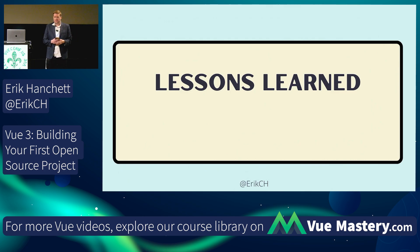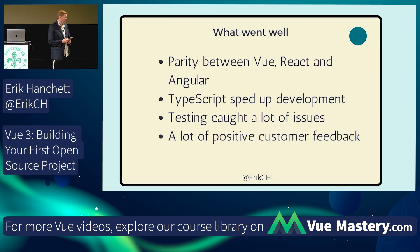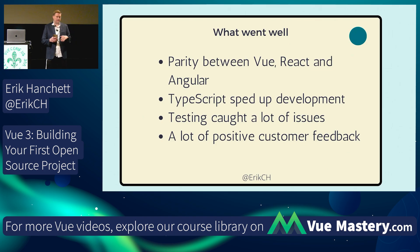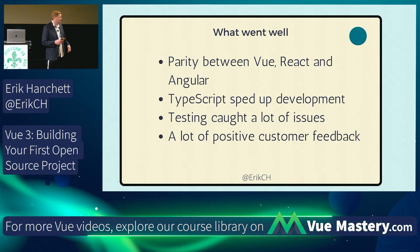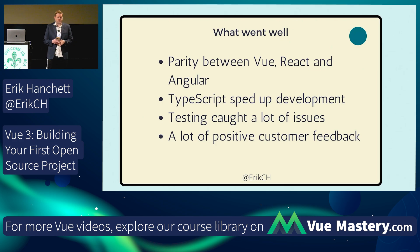We have some lessons learned through all this process. Things that went well: we had parity between Vue, React, and Angular — the same CSS between all three and pretty much the exact same features. They looked and acted identically, and we were really happy with that. TypeScript was a godsend — it really sped up development and we loved IntelliSense. Testing caught a lot of issues, and we had a solid CI/CD pipeline with Cypress tests running. We got a lot of positive customer feedback through a long beta period where customers could use it before switching from the older library.